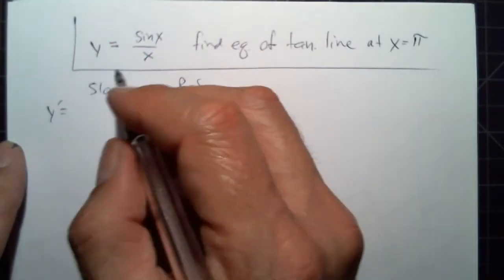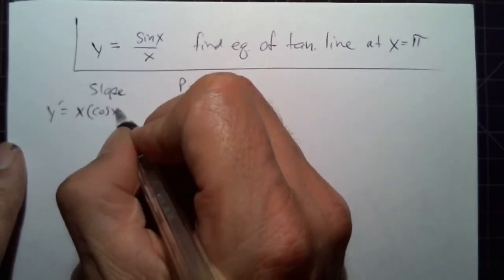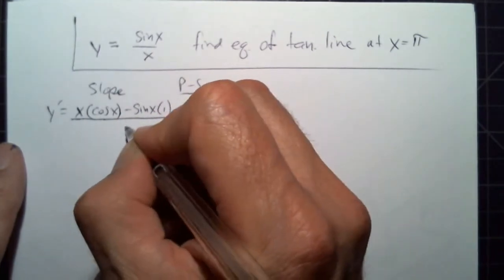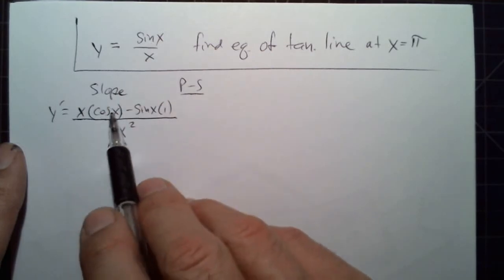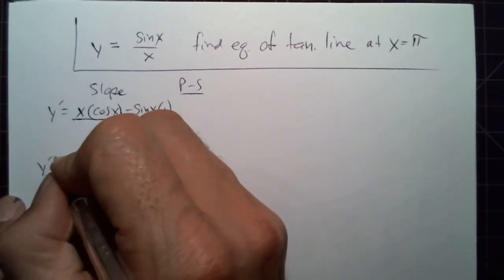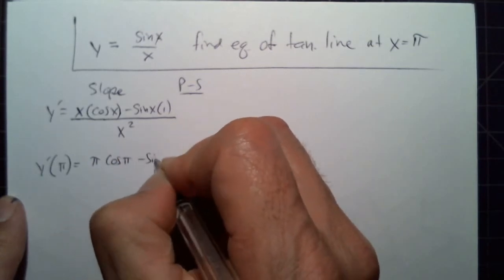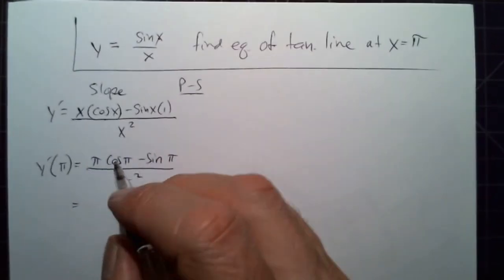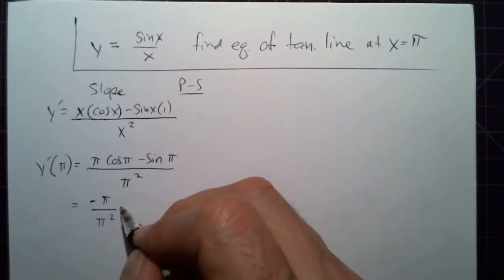The derivative is x times cosine x minus sine x times 1, over x squared — that's the denominator times the derivative of the numerator, minus the numerator times the derivative of the denominator. Let's evaluate at pi: cosine of pi is negative 1, sine of pi is 0, so we get negative 1 over pi.